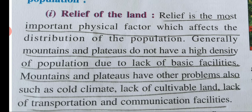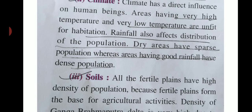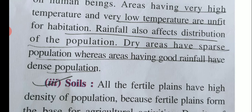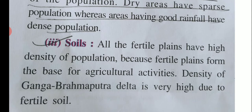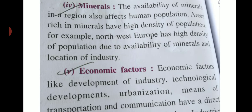Climate directly affects human beings - both very high and very low temperatures make survival difficult. Dry areas have very sparse population. Fertile plains are very important because agriculture determines population density. The Ganga-Brahmaputra plain has high population density because the soil fertility there is very rich, and due to that rich fertility, the population of that place is very high.